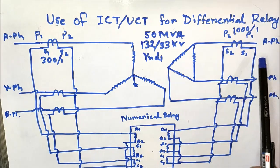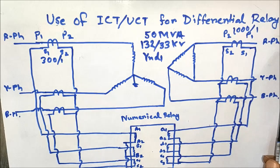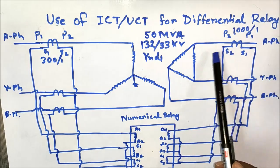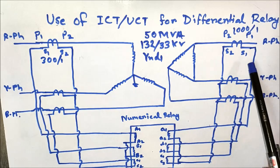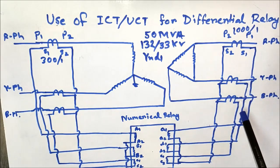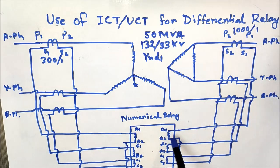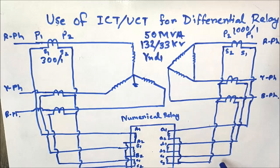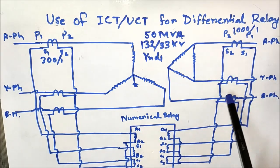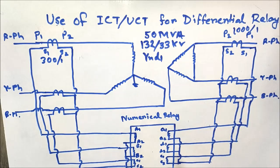Similarly, for the LV side phase CTs, P1 is connected to the 33 kV bus and P2 is connected to the transformer side. S1 for red, yellow, and blue phase are taken to the numerical relay at A1, B1, and C1 terminals respectively. A2, B2, and C2 terminals are shorted together for neutral formation, and connected back to the CT group where all S2 terminals are shorted. This is the connection diagram for the numerical relay.